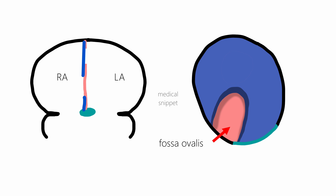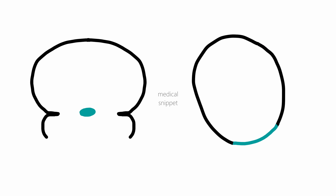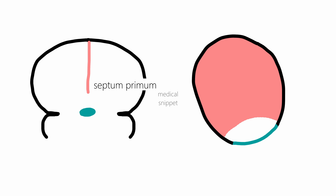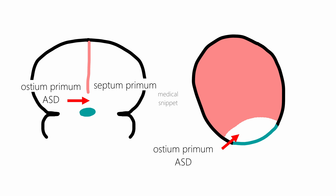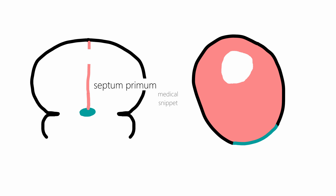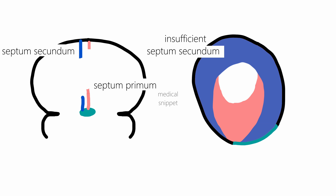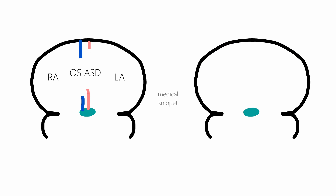The septum secundum which surrounds the fossa ovalis is called the limbus fossa ovalis. The lack of fusion between the flap valve septum primum and the septum secundum results in patent foramen ovale or PFO. When the septum primum fails to fuse with the endocardial cushions or the septum intermedium, the ostium primum atrial septal defect is formed. When there is excessive apoptosis and reabsorption of the septum primum, or when there is insufficient formation of the septum secundum, the ostium secundum atrial septal defect is formed. It should be noted that ostium secundum ASDs are direct communications between the two atria, whereas a PFO is a tunnel of variable width and length between the two atria.